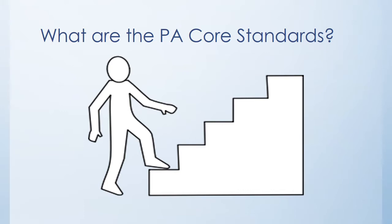The standards were developed to create a staircase connecting learning across years, with logical expectations building from year to year. The skills they learn in kindergarten build into first grade and so on. Next, you will see some examples of the progression of the standards across the grades, starting with 12th grade and moving to kindergarten.